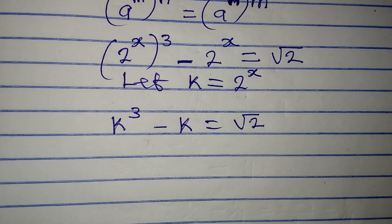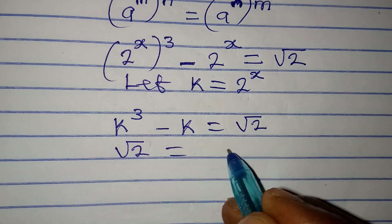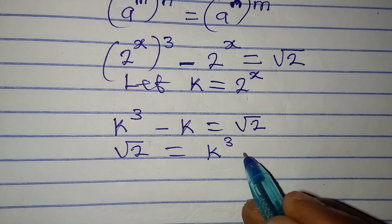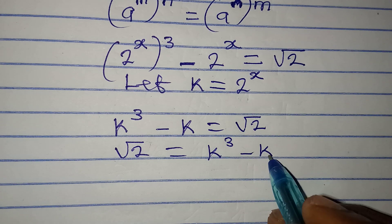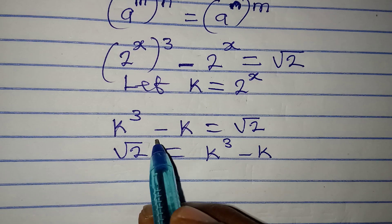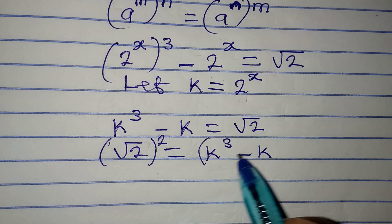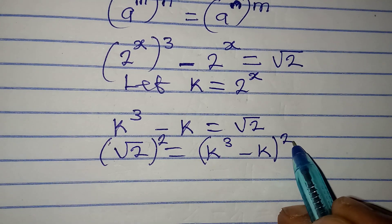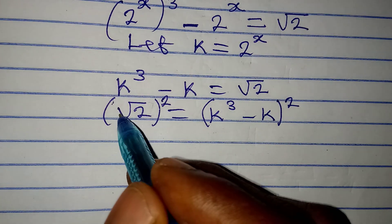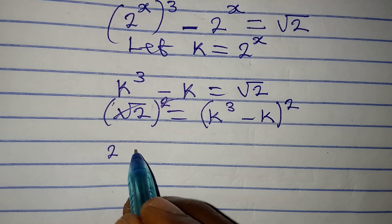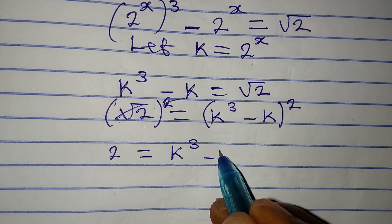Now I want to turn this around: square root of 2 equals k³ minus k. The next thing is to remove the square root — we square both sides to do that. Remember, what you do on one side you do on the other. After squaring and expanding, the square root cancels, and we have 2 equal to (k³ minus k) squared.